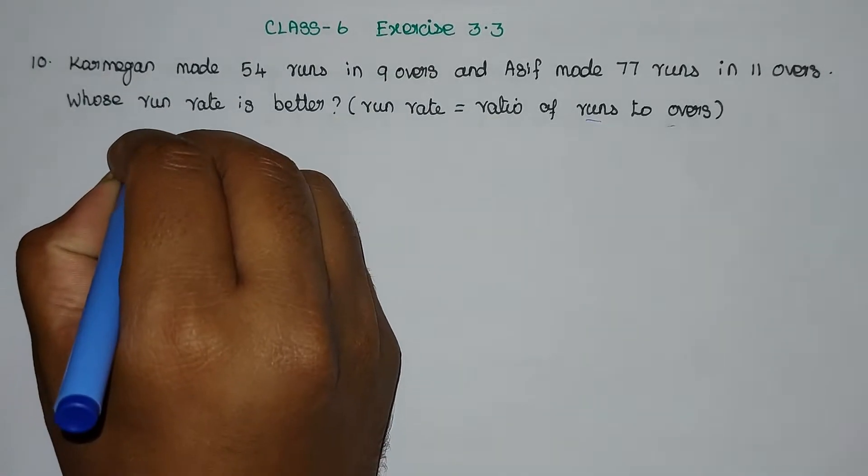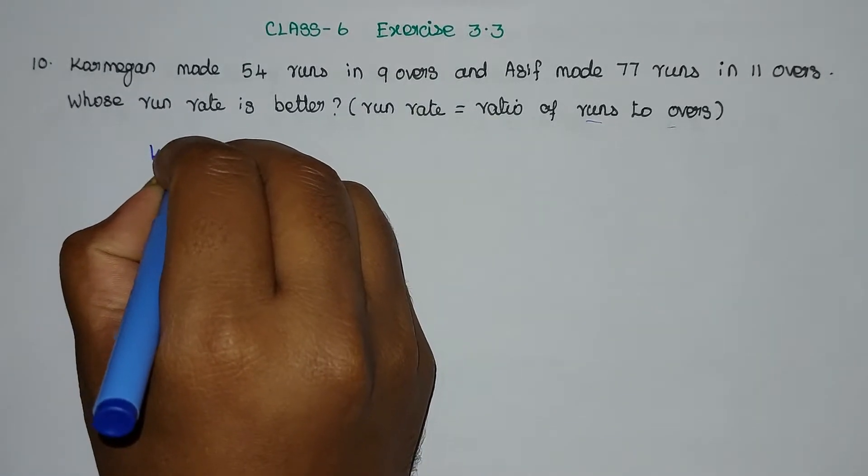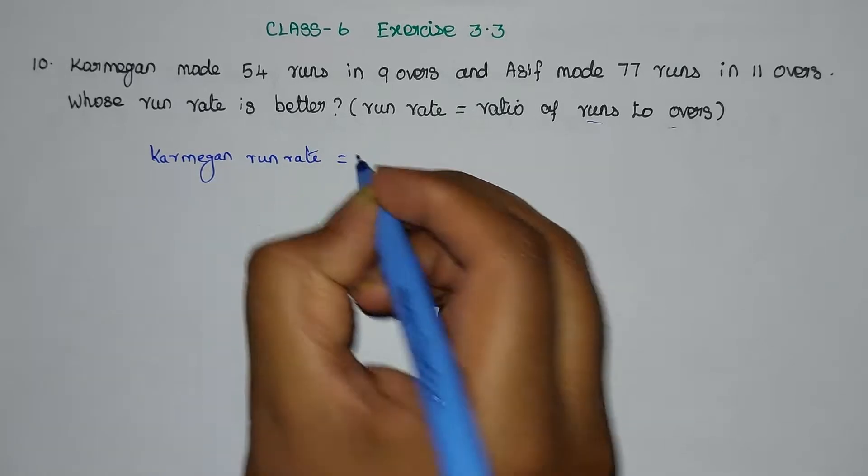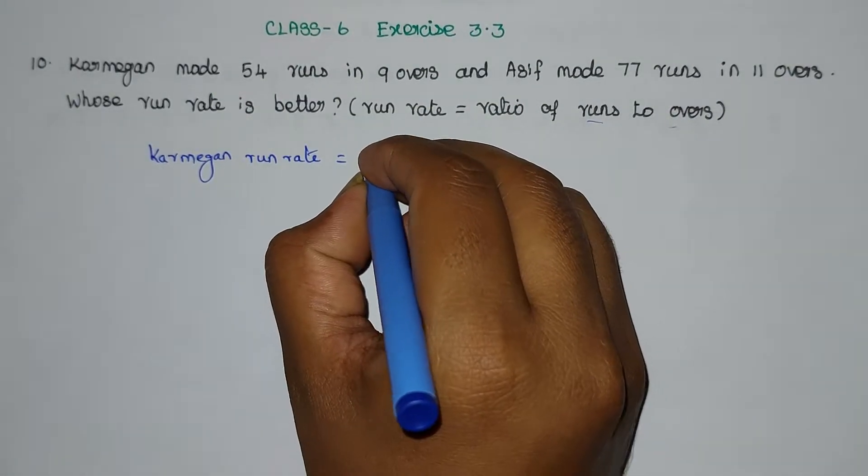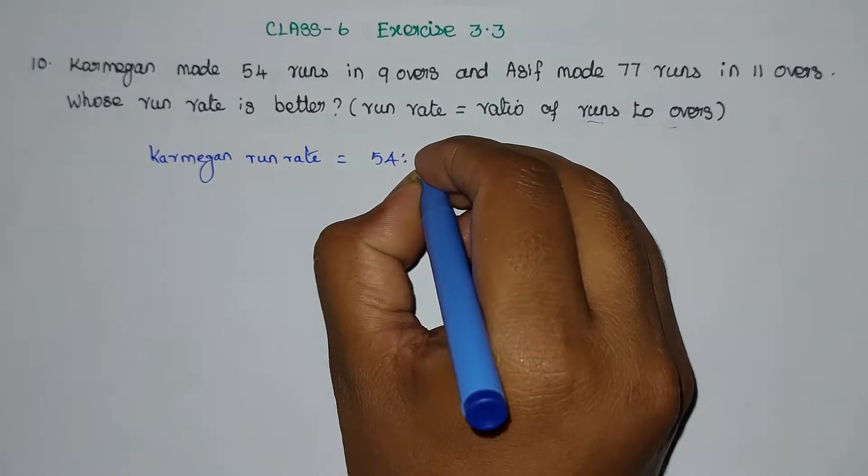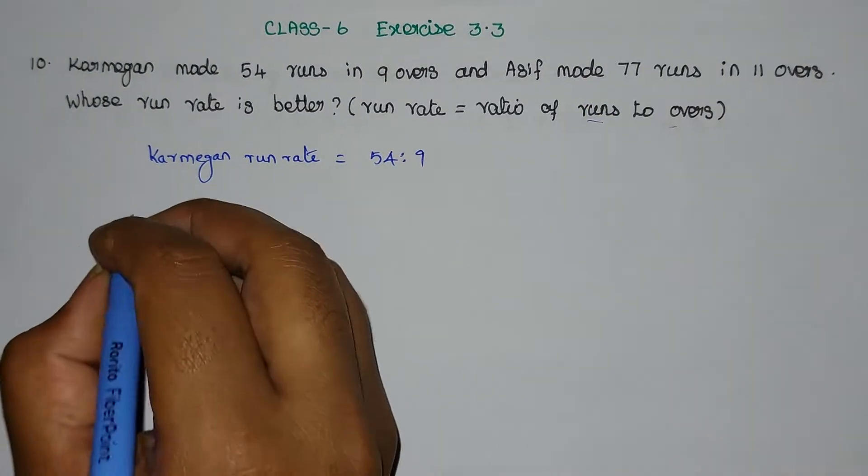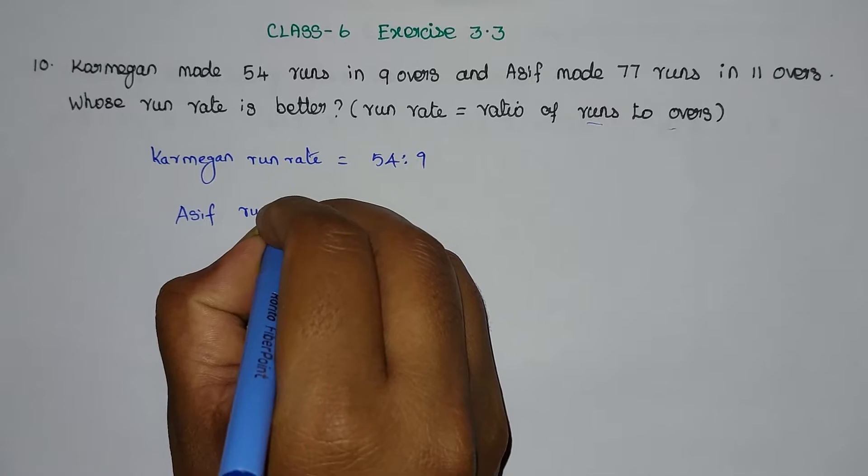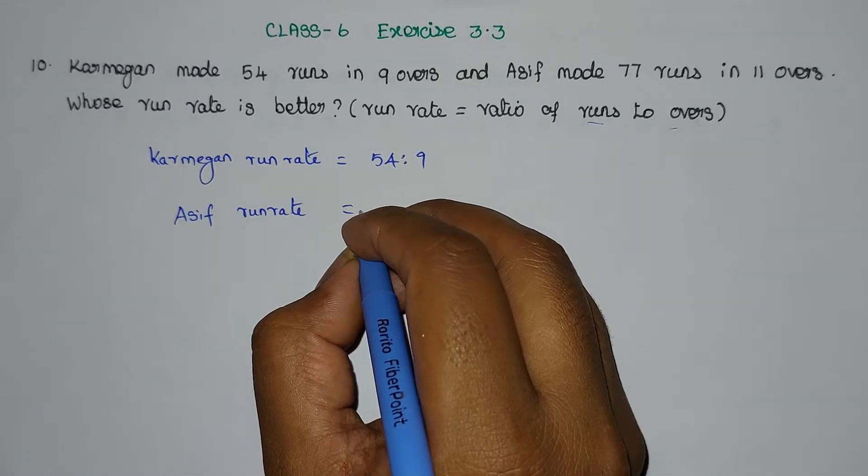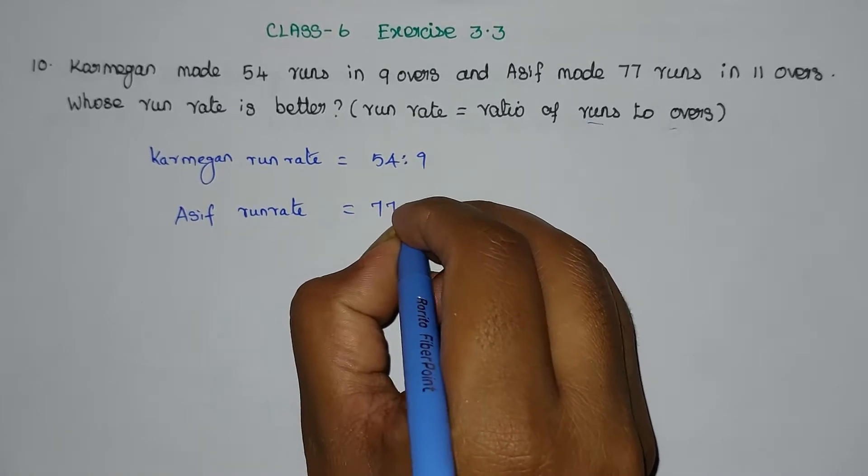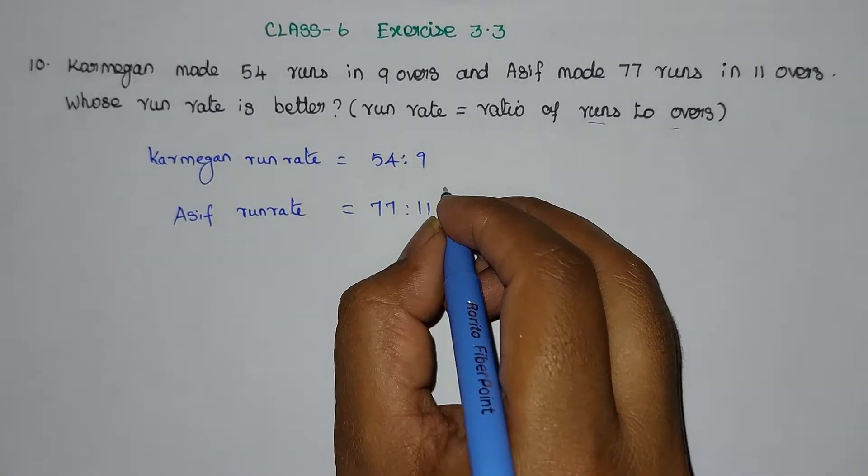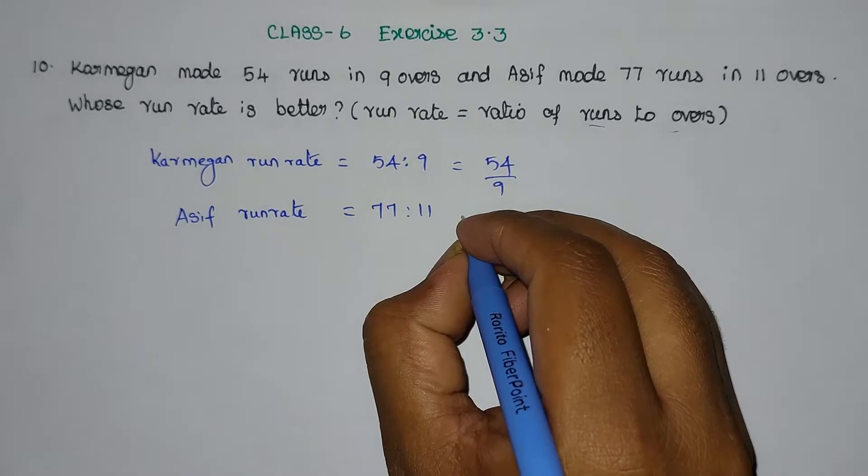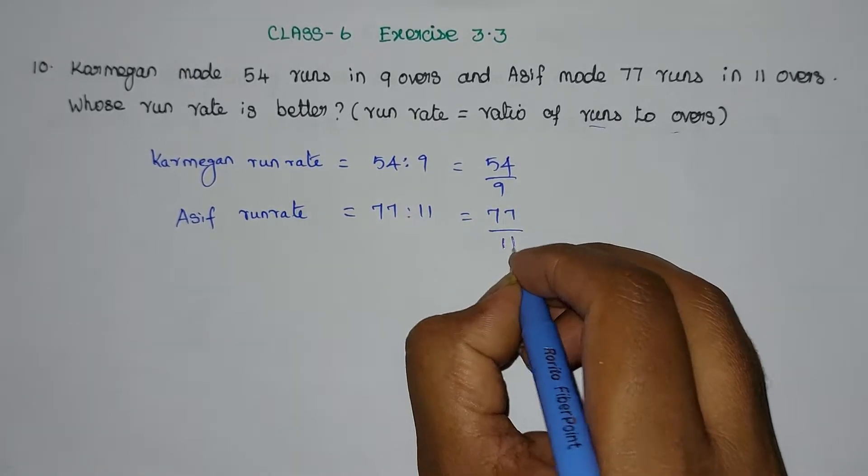Carmagan's run rate: 54 is to 9. Asif's run rate: 77 is to 11. In fraction form, Carmagan's is 54 by 9 and Asif's is 77 by 11.